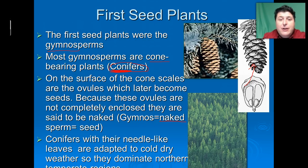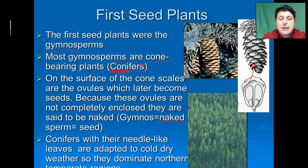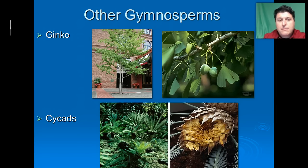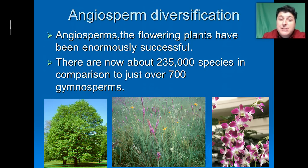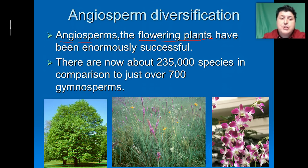Conifers have needle-like leaves, which allow them to be adapted to colder or drier weather, so we find them a lot in northern temperate regions. Other gymnosperms include ginkgo and the cycads. The most successful plants are probably the angiosperms, or the flowering plants — there are about 235,000 species compared to just over 700 gymnosperms.